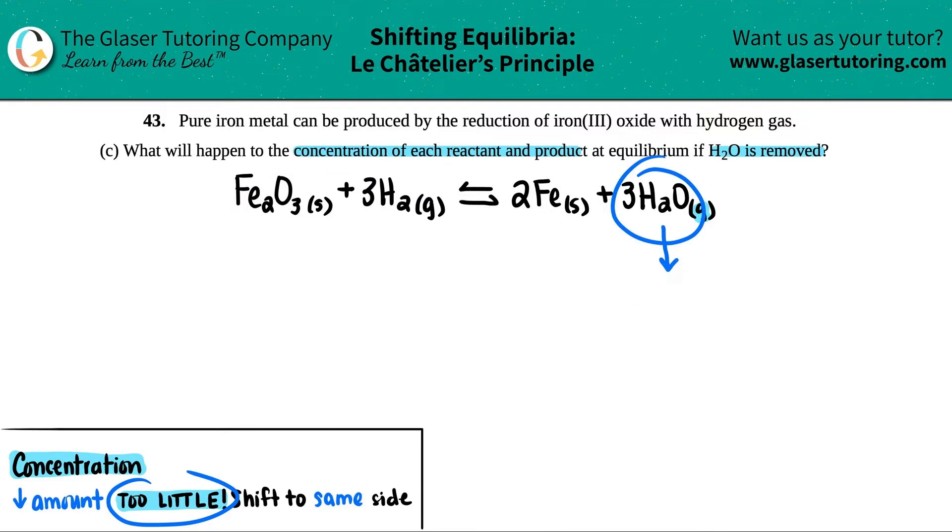Yeah, we gotta go in this direction. That's exactly what Le Chatelier's Principle says: if you have way too little, you shift to the same side. Since this was happening on the product side, you will shift to that side. Now we know we're doing the forward reaction.